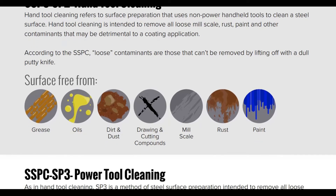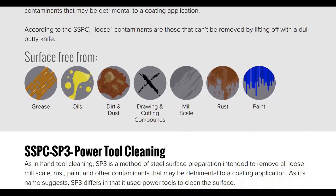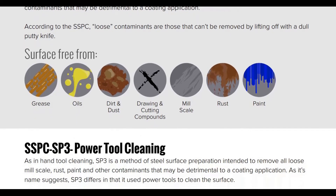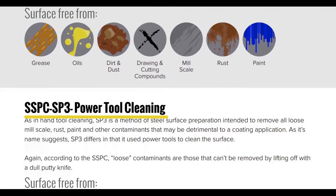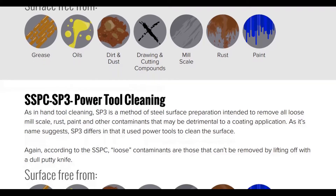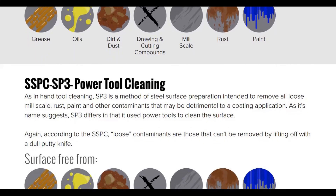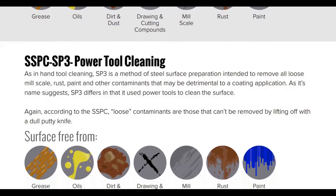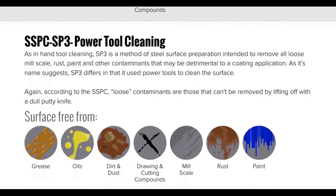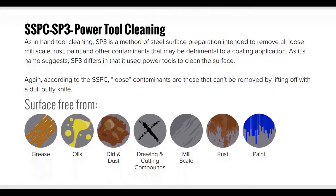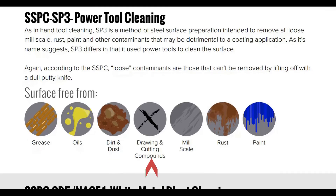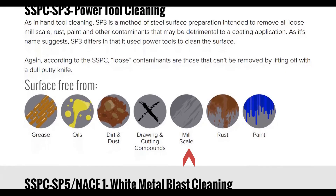SSPC-SP3 Power Tool Cleaning: as in hand tool cleaning, SP3 is a method of steel surface preparation intended to remove loose mill scale, rust, paint, and other contaminants that may be detrimental to a coating application. SP3 differs in that it uses power tools to clean the surfaces. According to the SSPC, loose contaminants are those that can be removed by lifting off with a dull putty knife. The surface should be free from grease, oil, dirt, dust, drawing and cutting compounds, mill scale, rust, and paint.